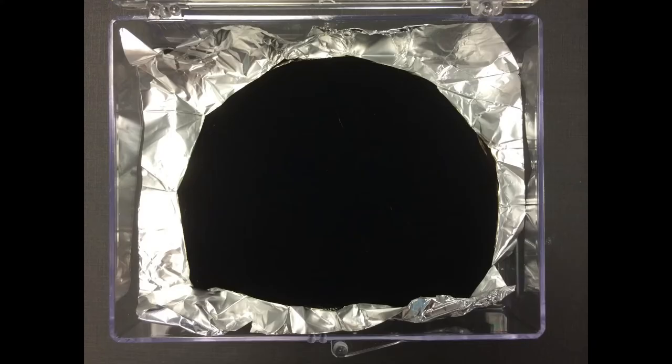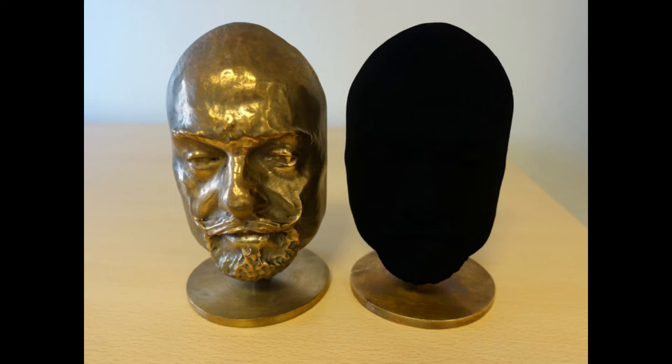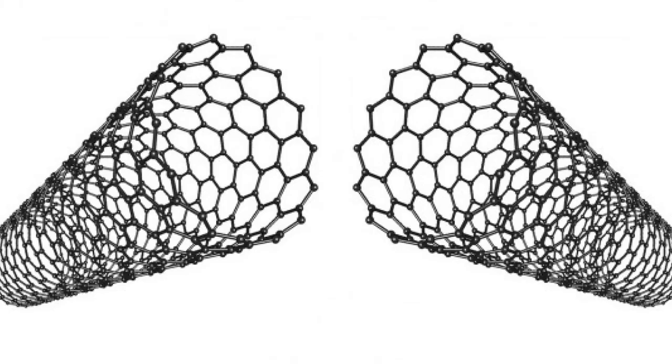In 2014, the darkest material known was claimed to be Vantablack, which absorbs up to 99.965% of visible light. Vantablack is created from millions of carbon nanotubes.